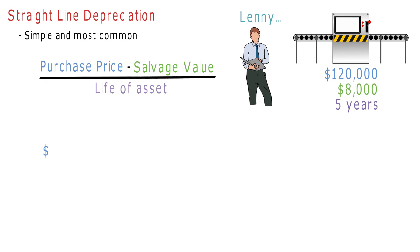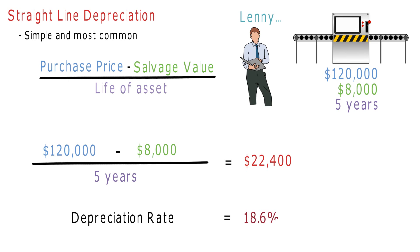Straight Line Depreciation will work as follows: The cost minus the estimated salvage value, divided by its lifespan, will equal the total depreciation amount each year of $22,400. This means that the machine will depreciate by 18.6% each year.